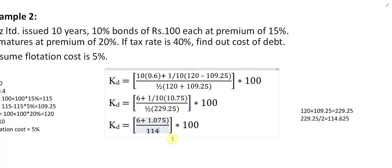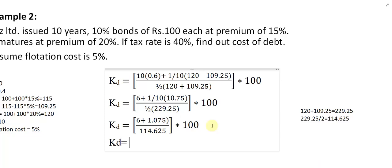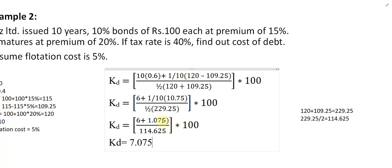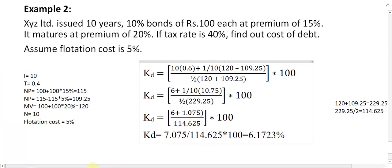Now apply the final formula: Kd equals the numerator divided by the denominator, multiplied by 100. That is 7.075 divided by 114.625, multiplied by 100. The result is approximately 6-point-something percent. This is the cost of debt capital for example number 2.